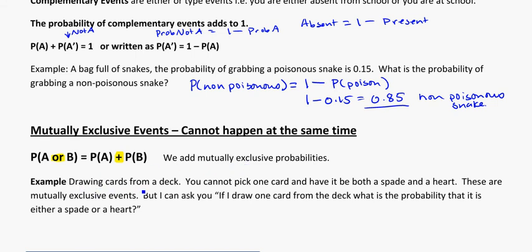An example here would be drawing cards from a deck. I cannot pick one card and have it be both a spade and a heart. Cards can only be one type of suit. They cannot be two types of suits at the same time. So these are what we call mutually exclusive events. But I could ask you the question then, if I draw one card from the deck, what is the probability that it is either a spade or a heart? So I'm looking at, I don't mind if it's a spade or if it's a heart. Either way I win.